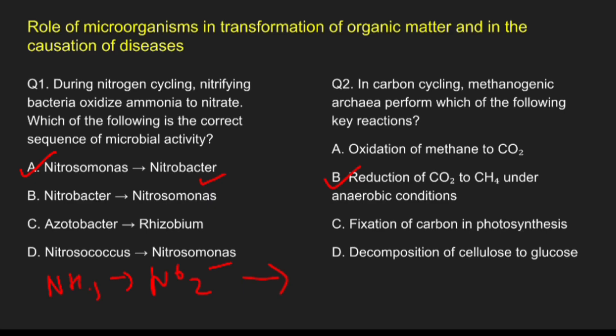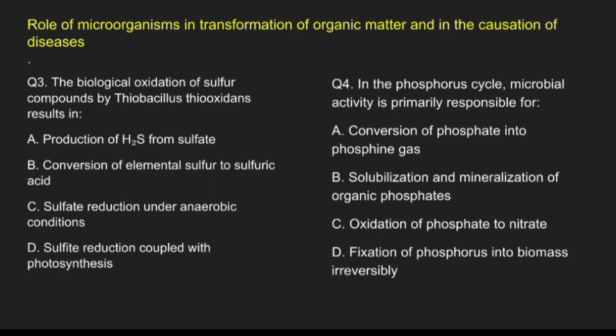Question 3: The biological oxidation of sulfur compounds by Thiobacillus thiooxidans results in — Option A, production of hydrogen sulfide from sulfate; Option B, conversion of elemental sulfur to sulfuric acid; Option C, sulfate reduction under anaerobic conditions; Option D, sulfate reduction coupled with photosynthesis. The correct answer is option B, conversion of elemental sulfur to sulfuric acid, carried out by Thiobacillus thiooxidans.